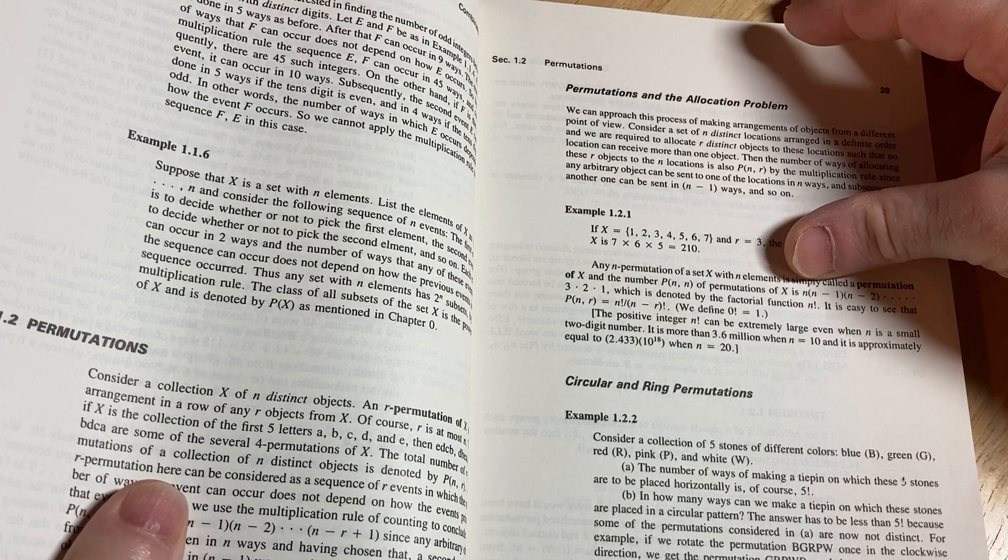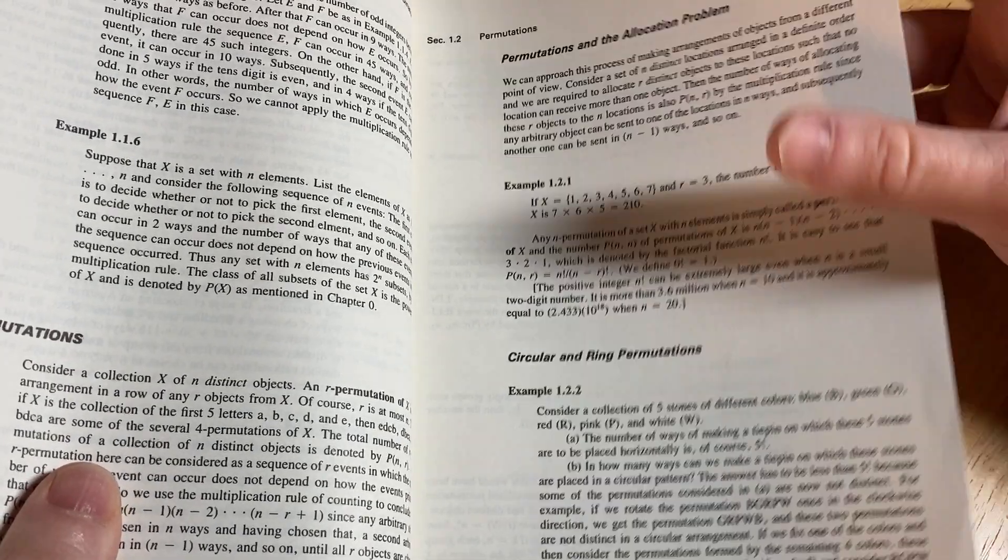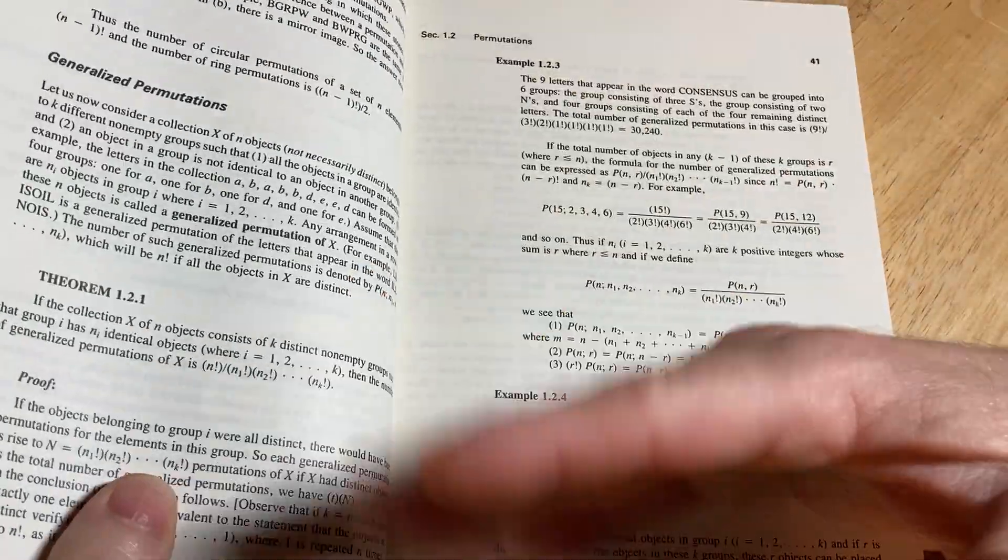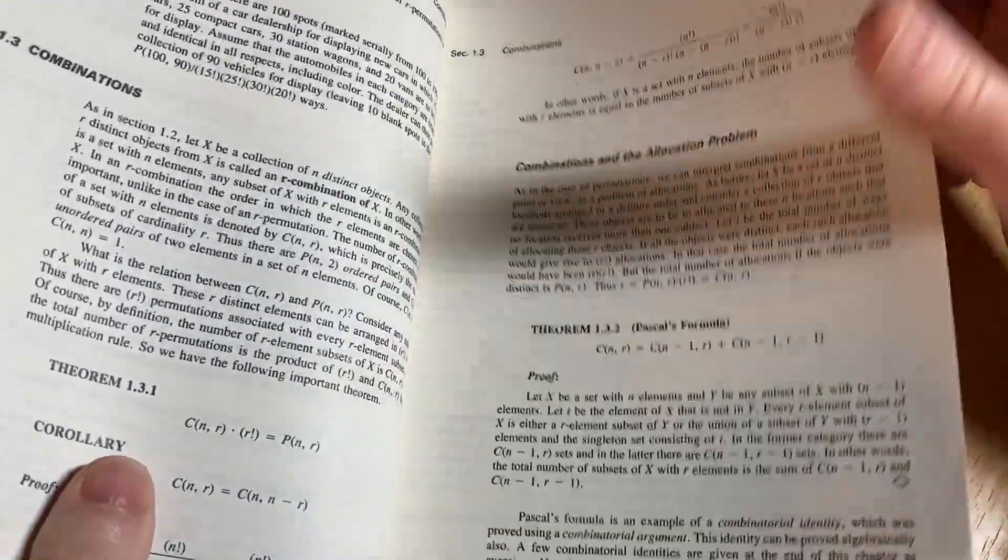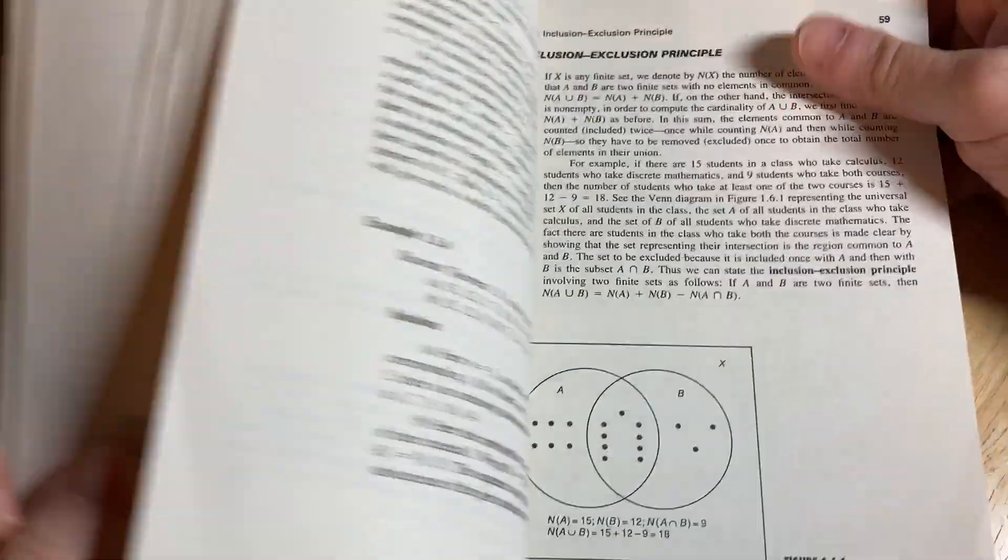And here it talks about permutations. Circular and ring permutations. I've read this, actually. I think I've read the entire first chapter. I've read all of chapter one, I believe. It's been a while.